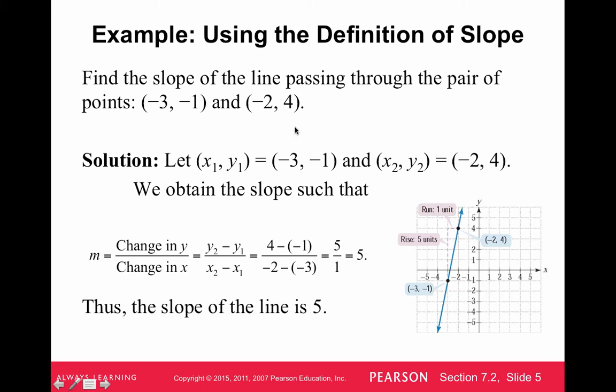So here's just an example of how to use the formula. Let's say we have two points. What we will be expecting you to do on a particular problem is to be able to look at a graph and write out the two points. So you would have to actually write these two points out and then compute the slope. So let's say we have the point negative 3, negative 1 here and the point negative 2, 4, and we're going to follow the formula.